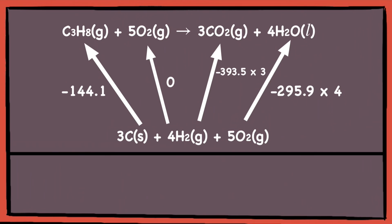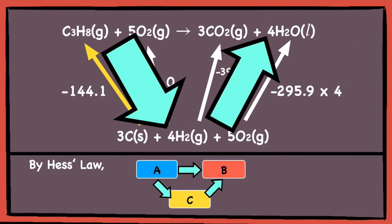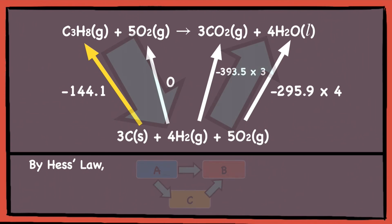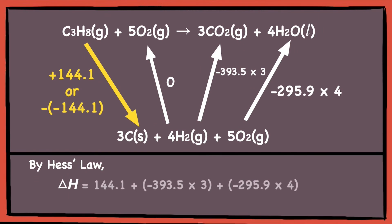To finally answer the question, we write by Hess's law. Because the arrow towards C₃H₈ opposes the anti-clockwise flow, we reverse the sign of negative 144.1 by multiplying by negative. Hence, the enthalpy change equals negative 2220 kilojoules per mole.